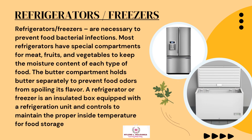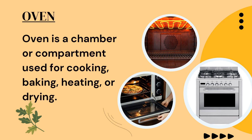Refrigerators and freezers are necessary to prevent food bacterial infections. Most refrigerators have special compartments for meat, fruits, and vegetables to maintain the moisture content of each type of food. The butter compartment holds butter separately to prevent food odors from spoiling its flavor. A refrigerator or freezer is an insulated box equipped with a refrigeration unit and controls to maintain the proper inside temperature for food storage. An oven is a chamber or compartment used for cooking, baking, heating, or drying.